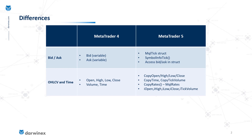In MQL5 we have to rely on two structures as well as a few functions to get all of this information. The advantages of these will become clearer as we continue in this series. To get bid and ask information we need the MQLTick struct, populated with the SymbolInfoTick function. For OHLCV and time we require the CopyOpen, CopyHigh, CopyLow, CopyClose, CopyTime, and CopyTickVolume functions.